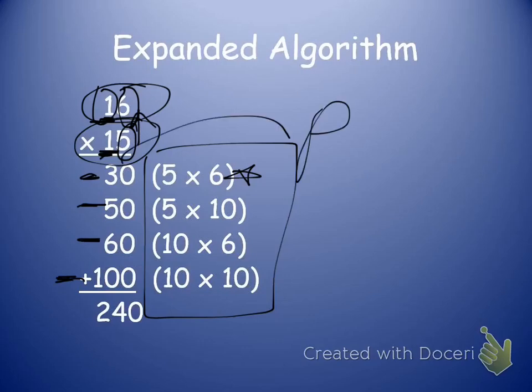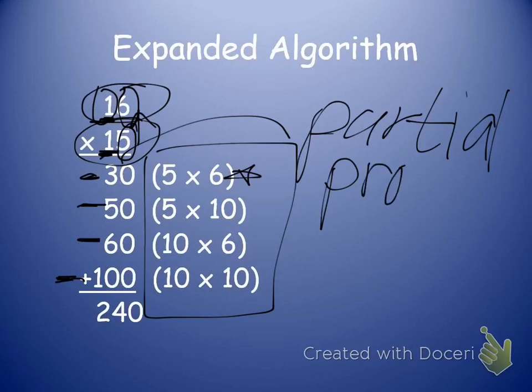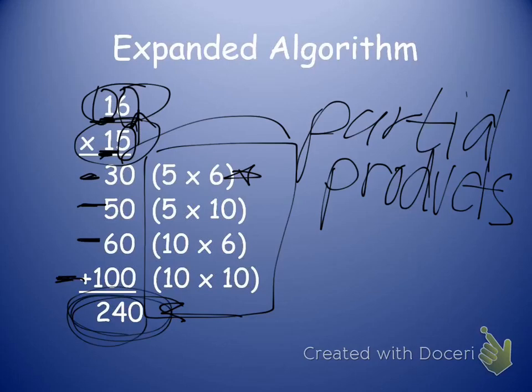These are all partial products. Because I have partial products, I need to remember to add. Because I don't have my final product. My final product is what I get down here. So once I add all of these numbers together, I'm going to get 240.